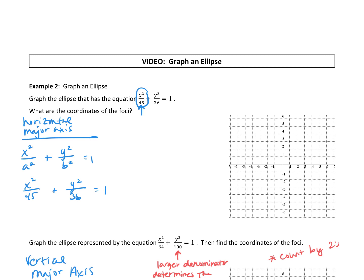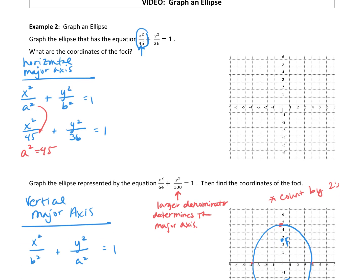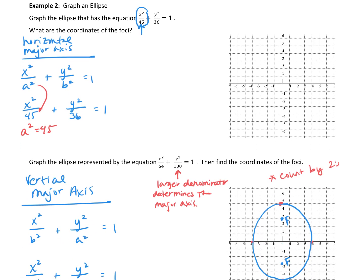Our equation is x squared over 45 plus y squared over 36 equals 1. We can see that 45 is going to be our a squared, so a squared equals 45. Square rooting both sides gives a equals positive and negative square root of 45. We reduce that radical: square root of 9 times square root of 5, so we have positive and negative 3 root 5. Because it's a horizontal major axis, these are on the x-axis: (3√5, 0) and (-3√5, 0).